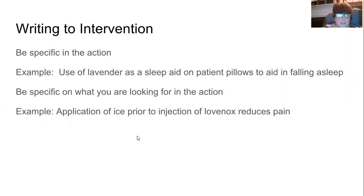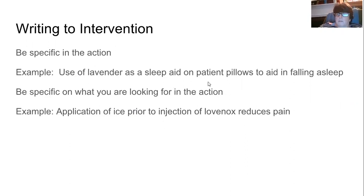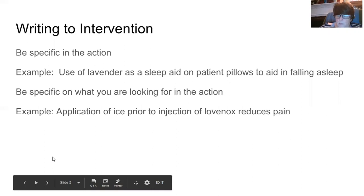The second part of a PICO structured question is the intervention. The intervention should be very specific to the action or what you're going to do. For example, an intervention I'm interested in exploring in this example is the use of lavender as a sleep aid on patient pillows to aid in falling asleep. Again, be specific in what the action is you're looking for. Another example: the application of ice prior to injection of Lovenox reduces pain — I'm looking specifically at applying ice as a way to reduce pain from a Lovenox injection.